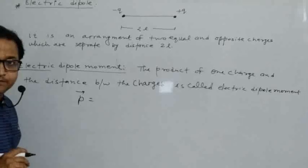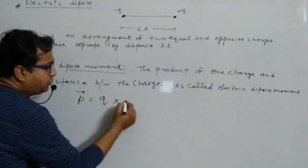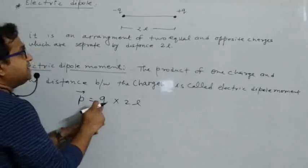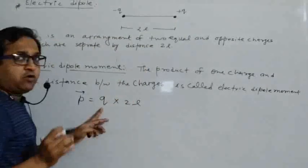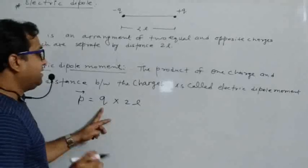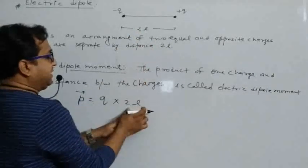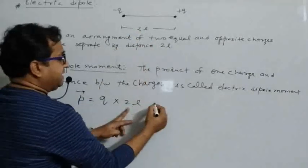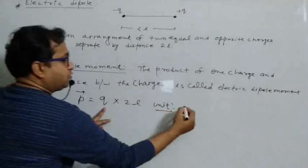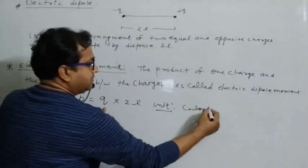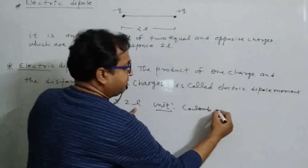The formula is: vector p equals q into 2l, where q is the magnitude of the charge (either minus q or plus q, taking only magnitude, not sign), and 2l is the distance between both charges. The unit of electric dipole moment is coulomb-meter.